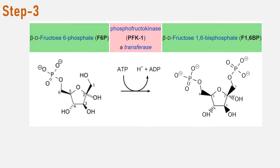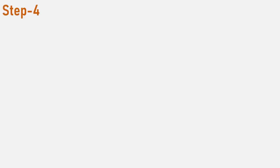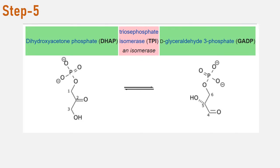Under the action of phosphofructokinase, an enzyme of the kinase family, fructose-6-phosphate is converted into fructose-1,6-bisphosphate. At this point, a second ATP donates its phosphate group forming fructose-1,6-bisphosphate. Aldolase then breaks down the 6-carbon sugar fructose-1,6-bisphosphate into two 3-carbon molecules: glyceraldehyde-3-phosphate and dihydroxyacetone phosphate. Aldolase belongs to the lyase family. The triose phosphate isomerase enzyme of the isomerase family then converts dihydroxyacetone phosphate into a second glyceraldehyde-3-phosphate molecule.